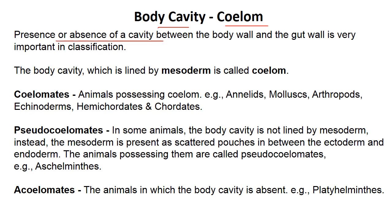The presence or absence of a cavity between the body wall and gut wall is very important for classification. The body cavity lined by mesoderm is called the coelom. Coelom is of three types: one is the coelomate organism, two is the pseudocoelomate organism, and three is the acoelomate organism. Coelomate means the organism has a true coelom with three layers — like from phylum Annelida to all higher chordates, they all belong to coelomate.